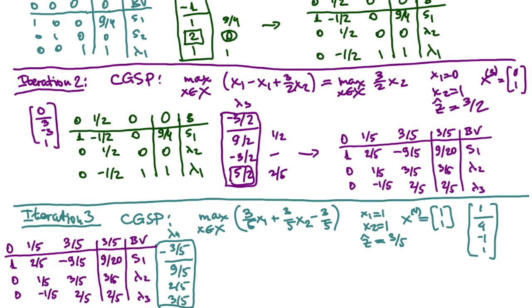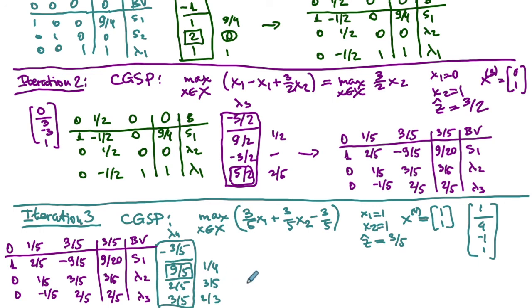We perform the ratio test for λ₄: row one gives (9/20)/(9/5) = 1/4, row two gives (3/5)/(2/5) = 3/2, row three gives (2/5)/(3/5) = 2/3. Row one wins, so s₁ leaves and λ₄ enters. We update the tableau to complete iteration three.